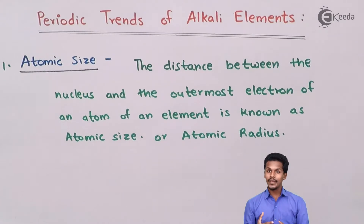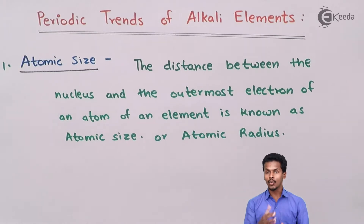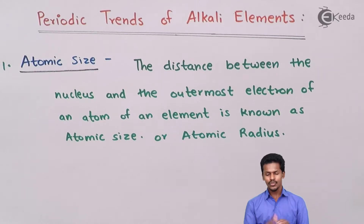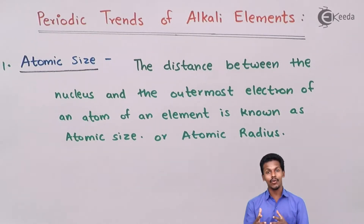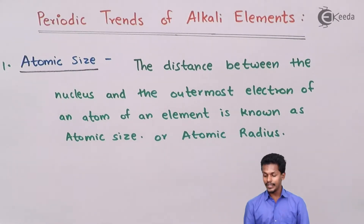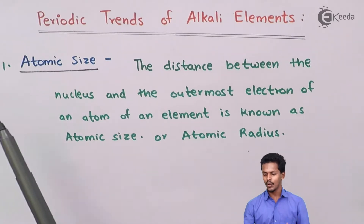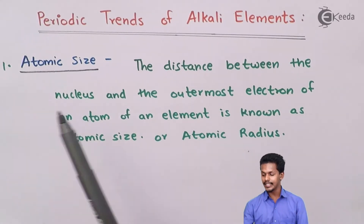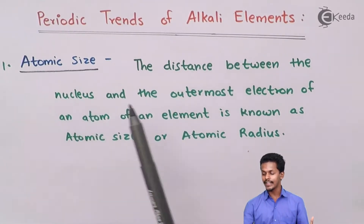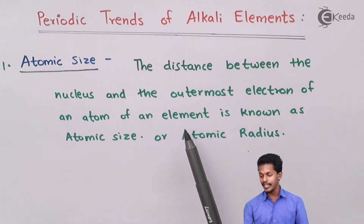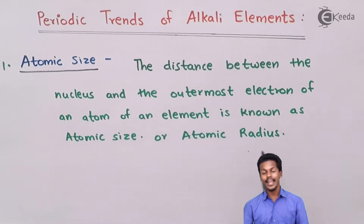Starting with atomic size — this is a trend we can observe in group 1 elements because atomic size increases down the group. The definition of atomic size: the distance between the nucleus and the outermost electron of an atom belonging to an element is known as atomic size or atomic radius of that particular atom.